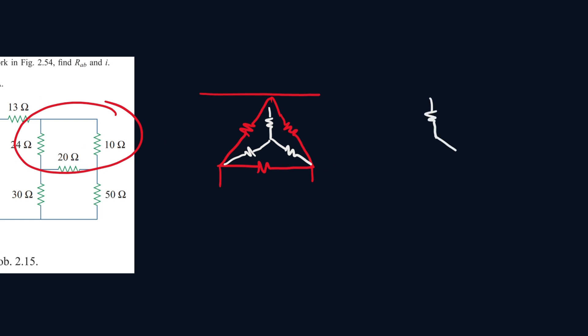Let me draw them here. This side was 10 ohms, this side was 24 ohms, and this side was 20 ohms. Now let's call these ones X, Y, and Z. We have to solve for X, Y, and Z.